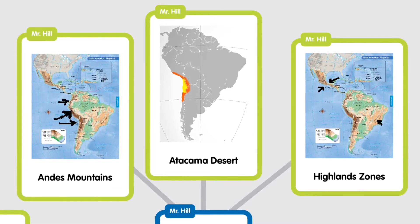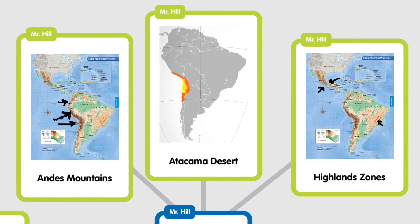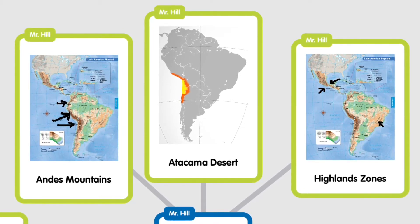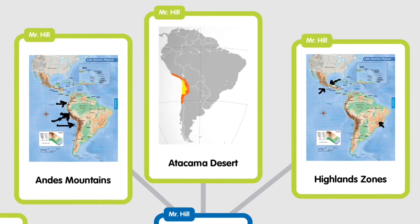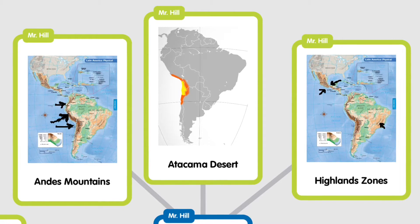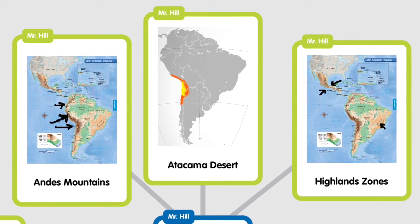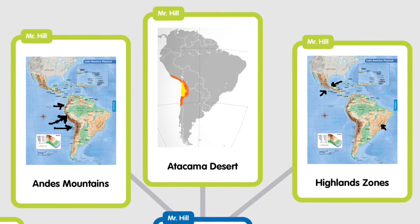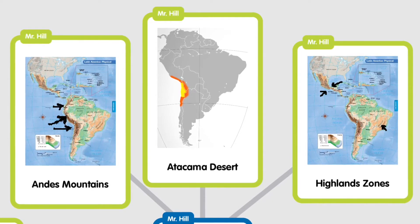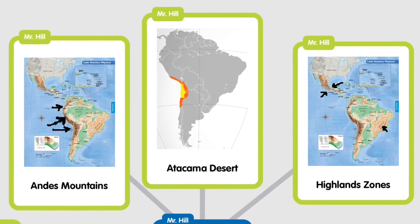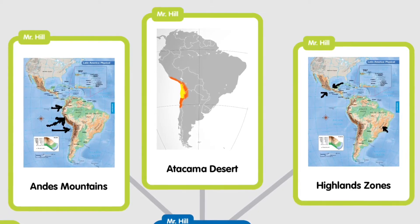Next we're looking at the Highland Zones — the other elevation zones found throughout the region. The Guiana Highlands are in the northeastern section of South America. You've also got the Mexican Plateau, which is formed by the Sierra Madre Oriental, the eastern mountain range through Mexico, and the Sierra Madre Occidental, the western mountain range through Mexico. These two mountain ranges come together and form the Cordilleras.